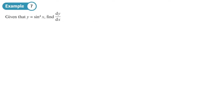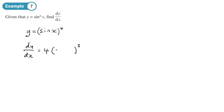Any time you get something to a power like this, the first thing to do is rewrite it. Y equals sin(x), all to the power 4. Then you can see we can apply the chain rule. So dy/dx: first, differentiate the outside — the inside of the bracket doesn't change. Then multiply by the inside differentiated, and sine differentiated is going to be cos. So the final answer is 4 sine cubed x times cos x.